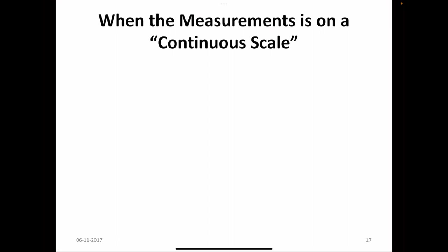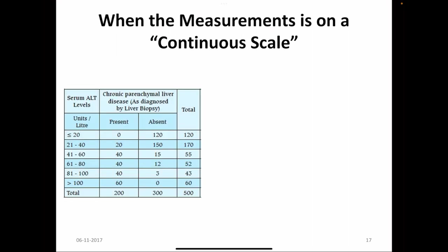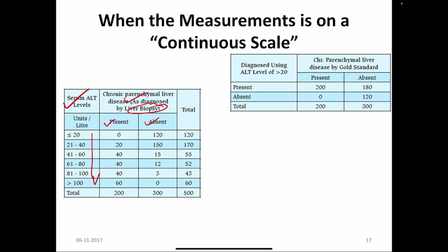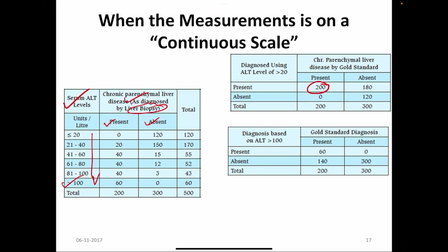So far we have discussed outcomes of the diagnostic test in terms of categorical variables — disease present or absent. When measurements are based on a continuous scale, for example random blood sugar or HbA1c for detecting diabetes mellitus, we have a continuous scale. Here the example uses serum ALT for chronic parenchymal liver disease, confirmed by liver biopsy. Based on the liver biopsy, disease present and absent are categorized along with serum ALT levels. Taking a cutoff of 20 — more than 20 means disease present — gives good sensitivity but very low specificity. If we increase the cutoff to 100, sensitivity is reduced but specificity is very good.